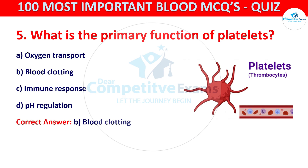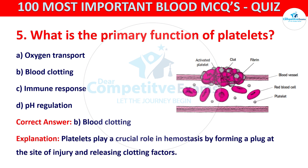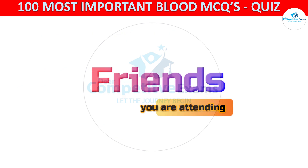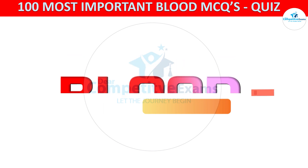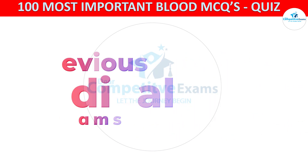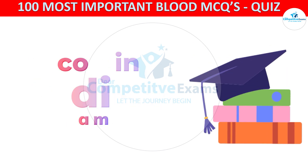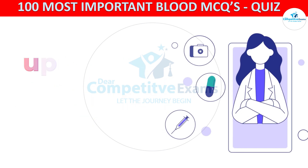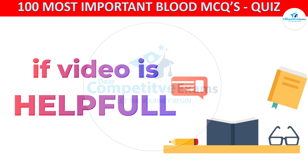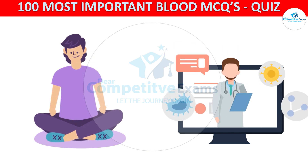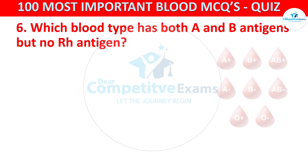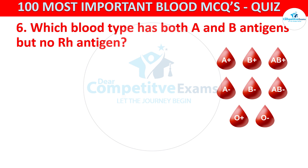The correct answer is B, that is blood clotting. Platelets play a crucial role in hemostasis by forming a plug at the site of injury and releasing clotting factors. You are watching 100 most important and repeated MCQs on blood — questions asked in many previous medical exams, likely to appear again in upcoming 2024 exams. Please like, subscribe, and share this video. Next question: which blood type has both A and B antigens but no Rh antigen? Your options are A negative, AB positive, B positive, or O positive.